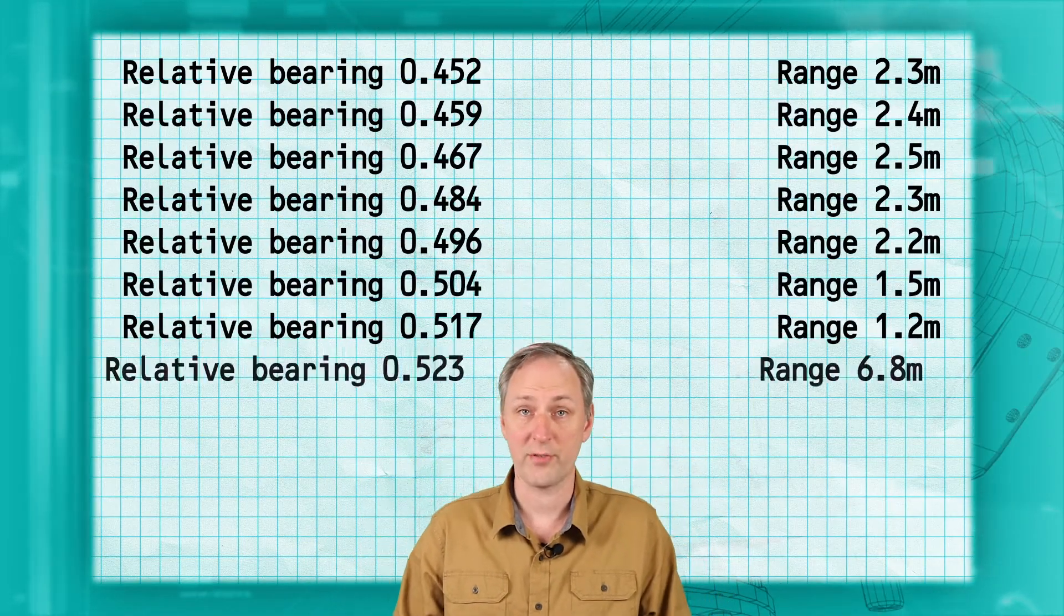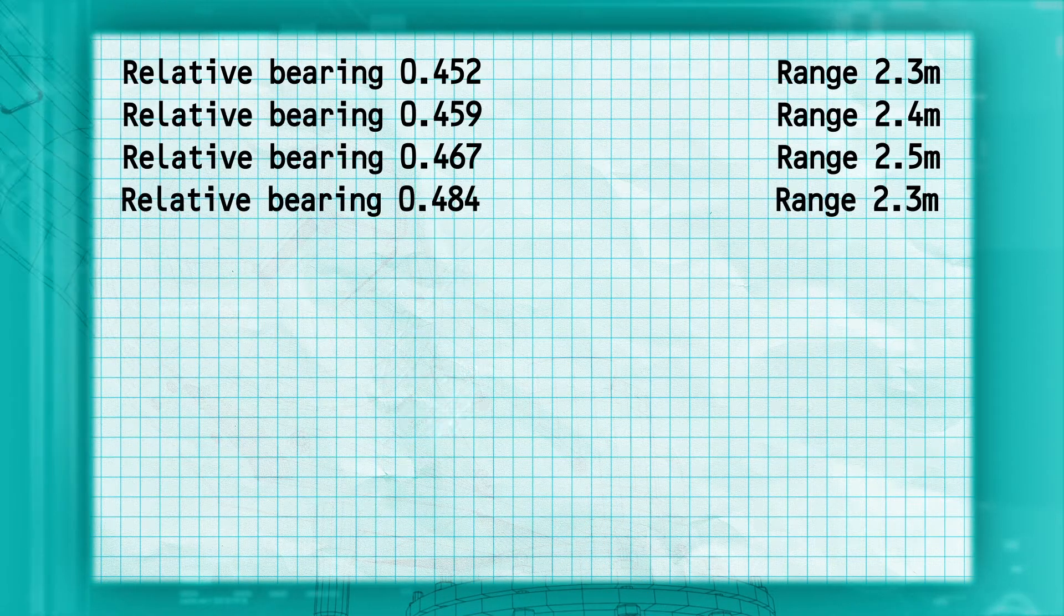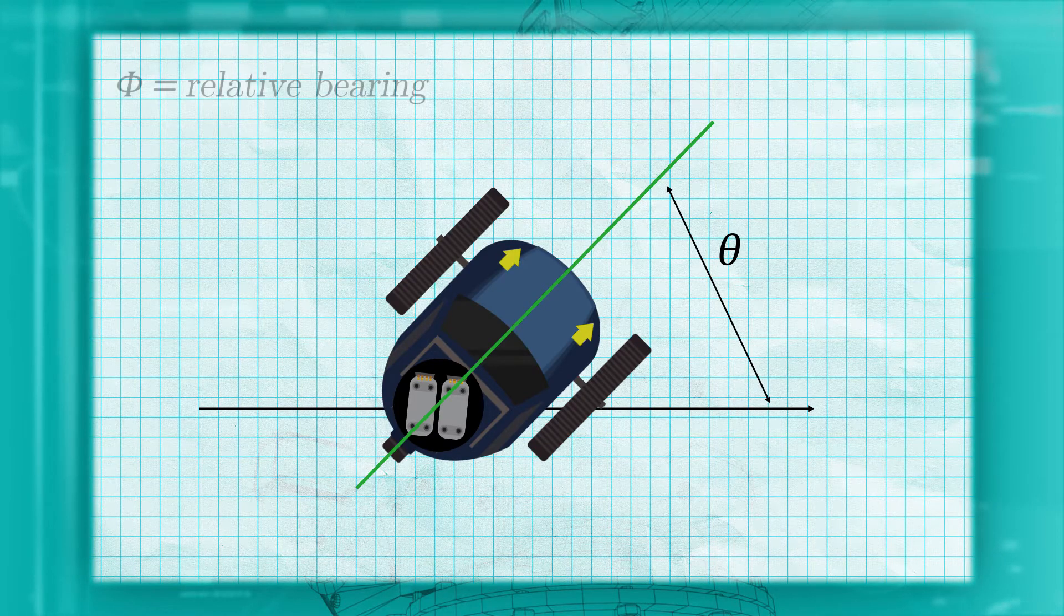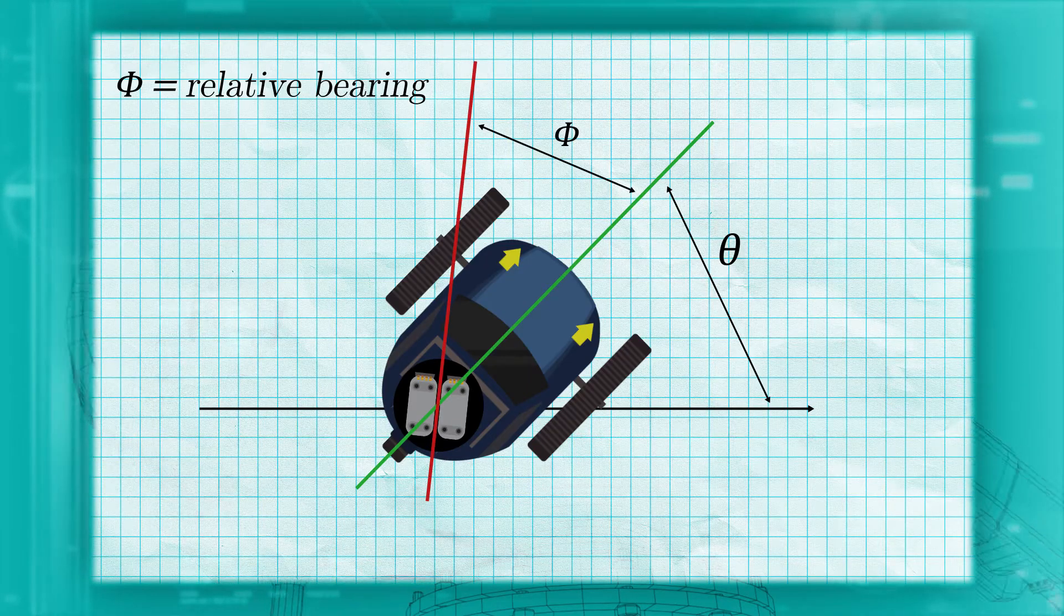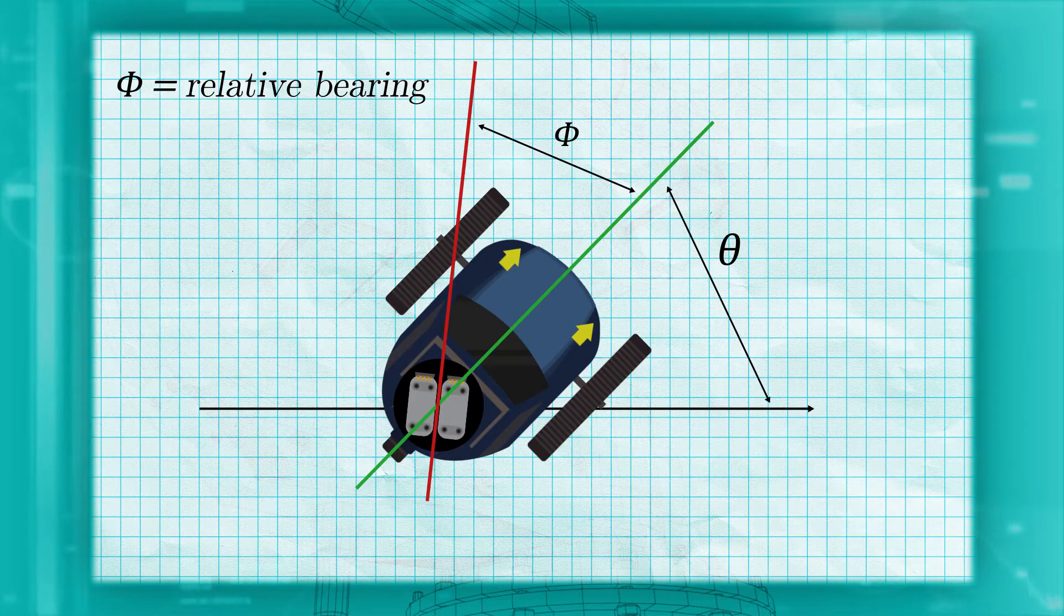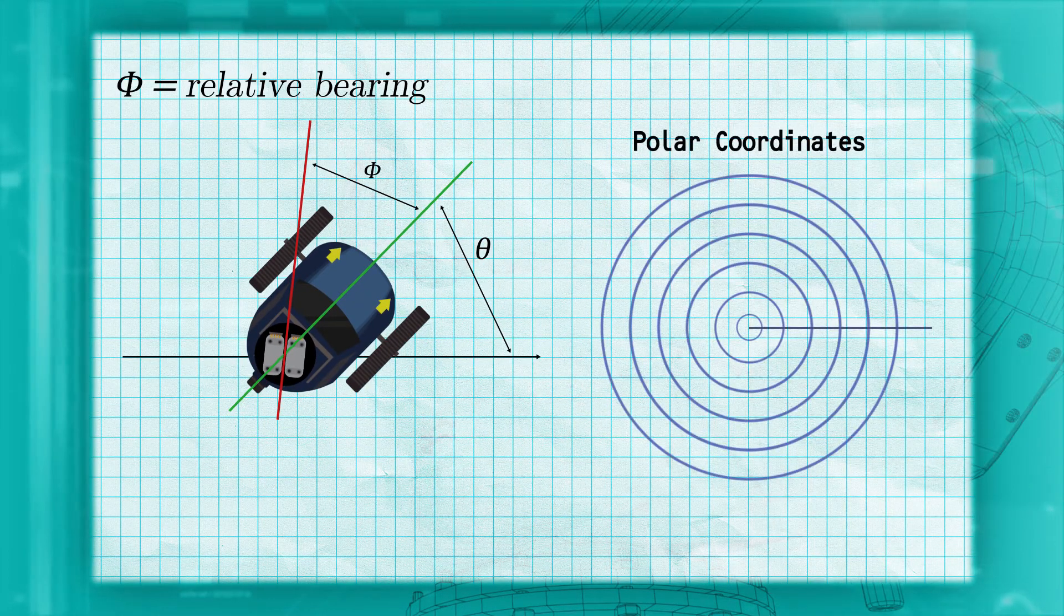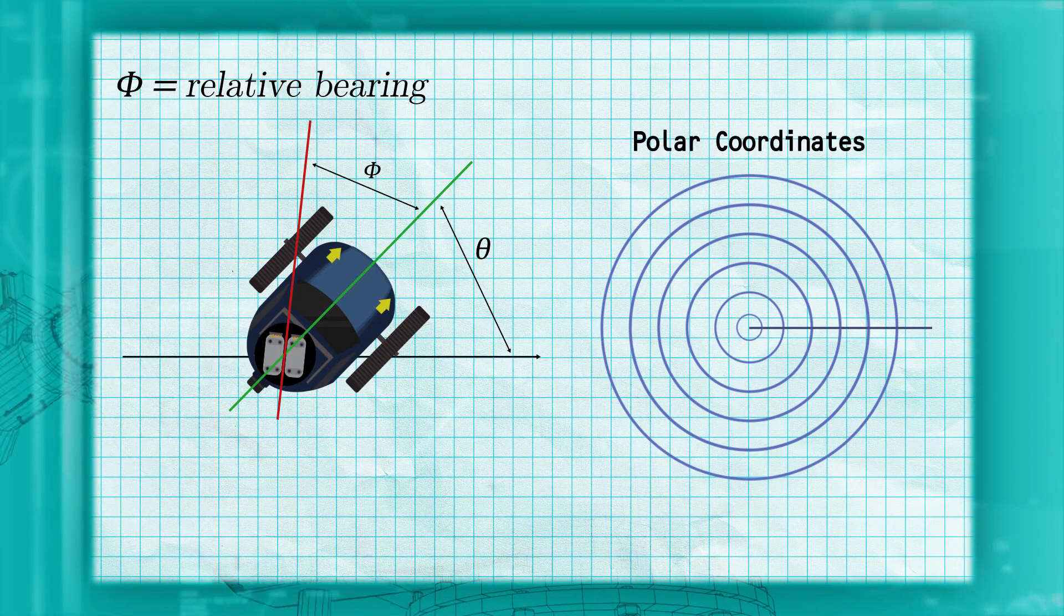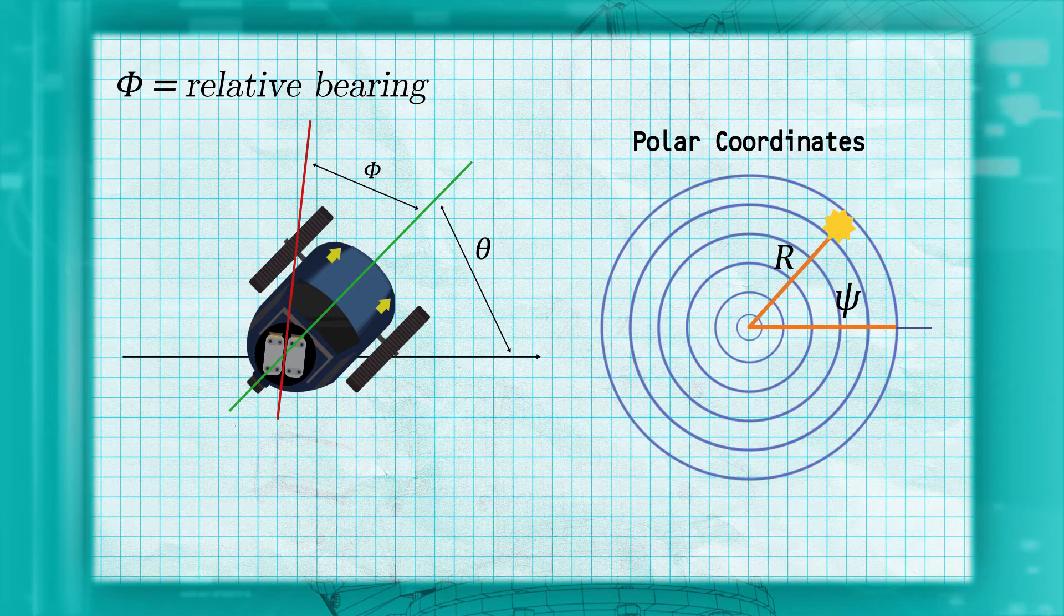What the LIDAR produces for the robot is a list of directions, called relative bearings, and an accompanying distance in each of those directions. They are called relative bearings because they measured the angle between the robot and the object, rather than from some absolute reference such as the x-axis. We'll use the Greek letter phi to refer to the relative bearings from the LIDAR. The data from a scanning LIDAR is essentially points and polar coordinates. If you remember polar coordinates, they consist of an angle and a range, exactly the same as the range and relative bearing the LIDAR produces.